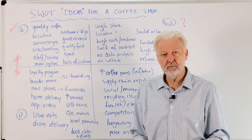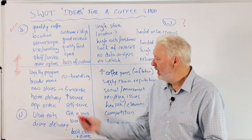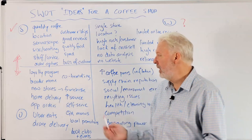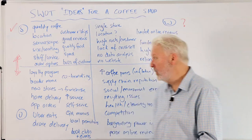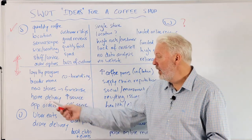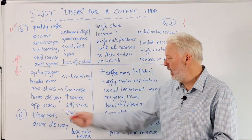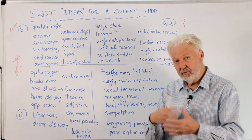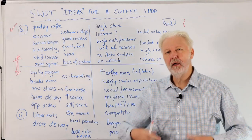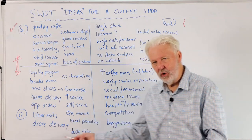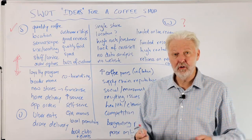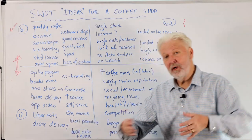If we've only got one or two stores, we could look at opening new stores — though that's very expensive in rental and fit-out costs. Alternatively, we could look at franchising and pass those costs to a franchisee while we take a percentage. Most fast food places use a franchise model, which is how they grow to thousands of stores without fronting the capital themselves. We could also look at home delivery, app ordering, QR menus in-store, and partnering with food delivery platforms like Uber Eats to expand our reach and sales.